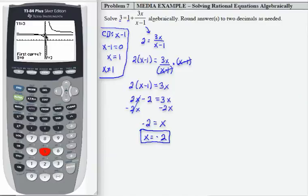So I'm going to go 2nd calc number 5. Now I need to pay attention to where my cursor is. My cursor is on the side of the graph where the intersection is. So I can just hit enter three times.